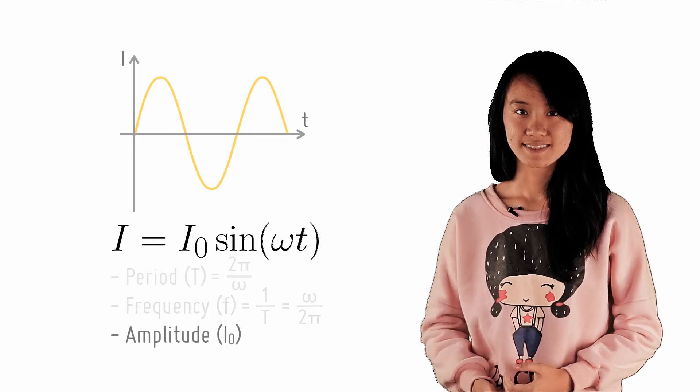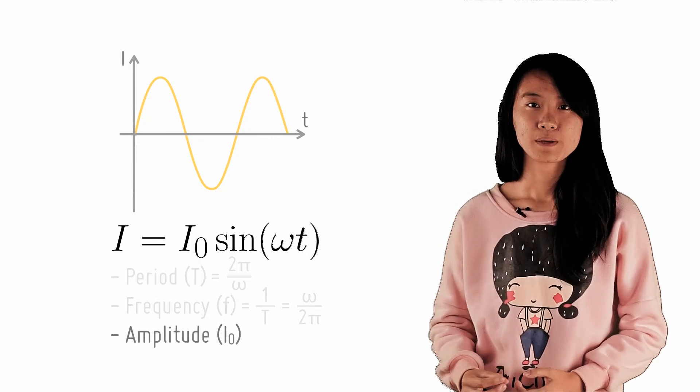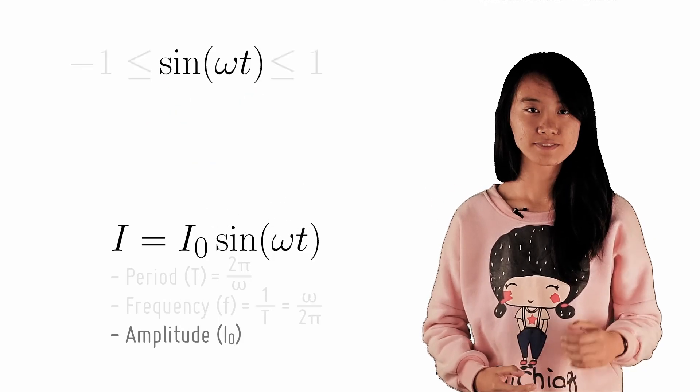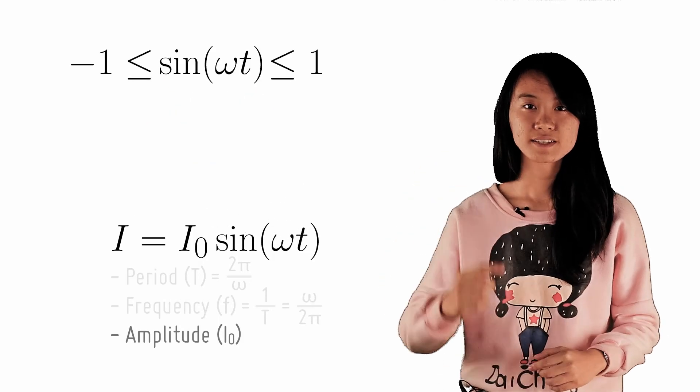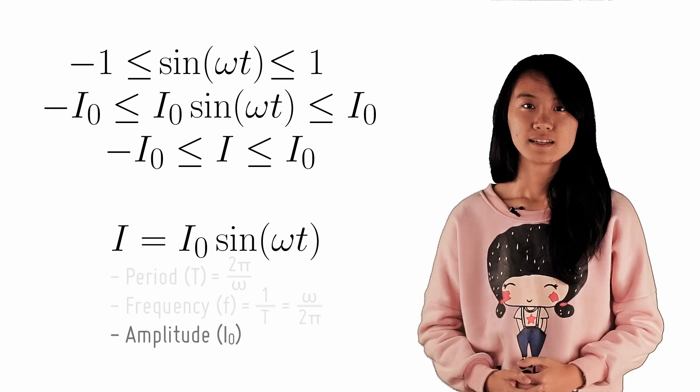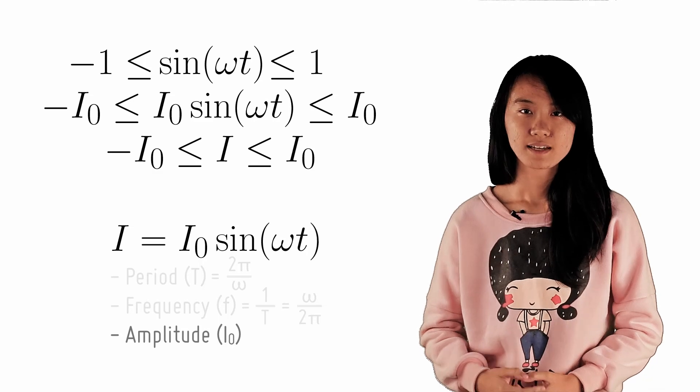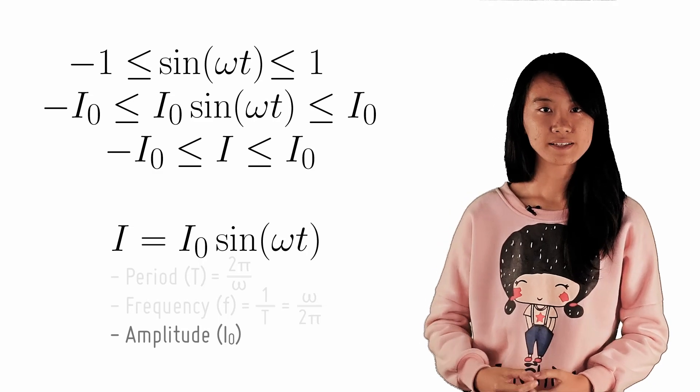Last, amplitude. Recall that this is the maximum current value of an AC signal. Because the range of sine is from negative 1 to 1, so the range of current is from negative I₀ to positive I₀. That is, the magnitude of the current is maximum at I₀. Therefore, the amplitude is simply I₀ in the equation.